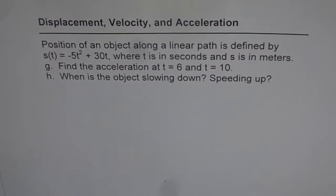Displacement, velocity, and acceleration. This is the third and last video on the problem relating displacement, velocity, and acceleration in different ways, understanding its equation and graphical representation. The question is: position of an object along a linear path is defined by s(t) = -5t² + 30t, where t is in seconds and s is in meters.